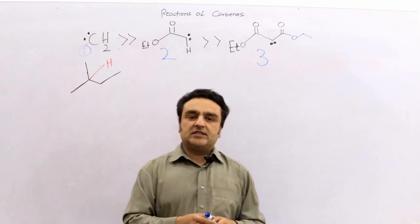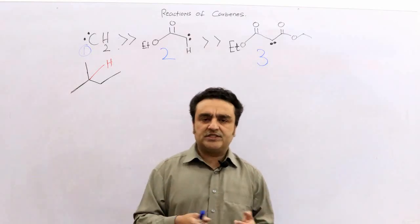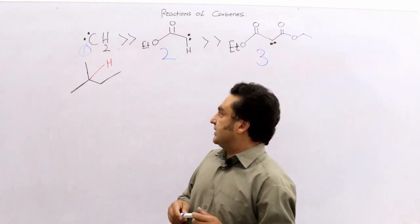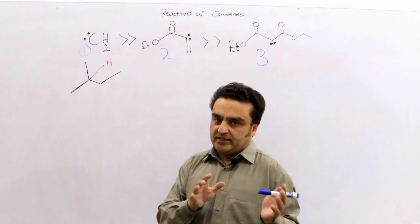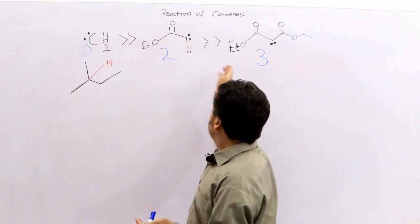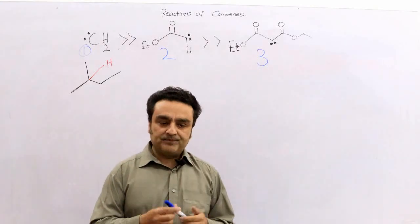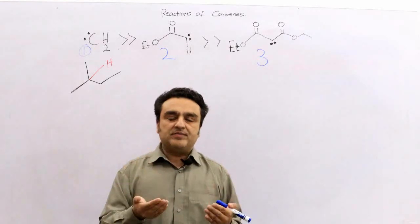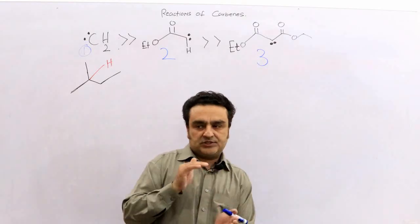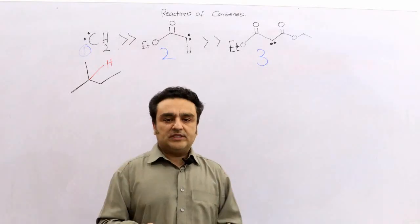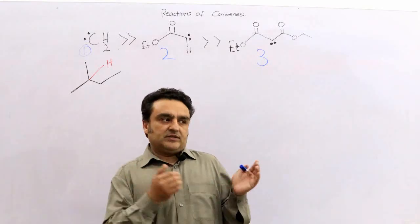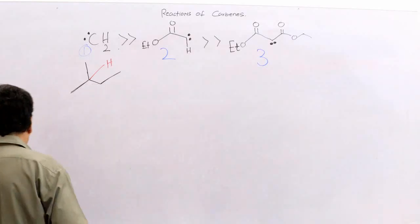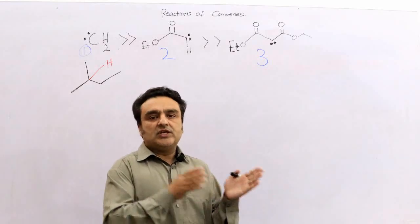In the previous lecture we studied how the carbene inserts. Today we will discuss the mechanism. This first carbene is blind, the second has some selectivity, and the third is much more selective. The question is why. To address that, I have to give some examples so we may understand the mechanism. It's not complicated but it's not easy to understand with a single statement — it requires a bit of illustration.